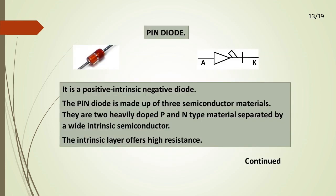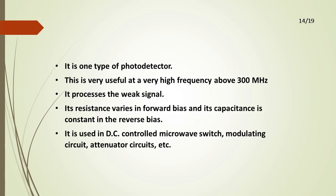PIN Diode. It is a Positive Intrinsic Negative diode. The PIN diode is made up of three semiconductor materials: two heavily doped P and N type materials separated by a wide intrinsic semiconductor. The intrinsic layer offers high resistance. It is one type of photodetector, very useful at very high frequencies above 300 MHz. It processes weak signals. Its resistance varies in forward bias and its capacitance is constant in reverse bias.